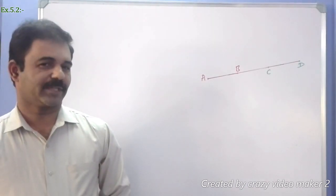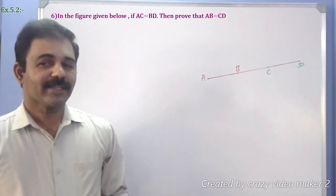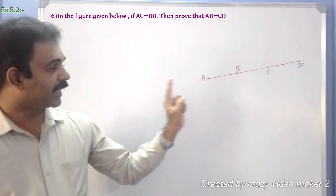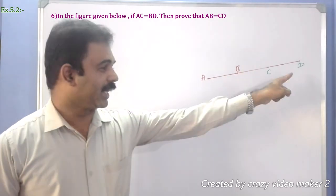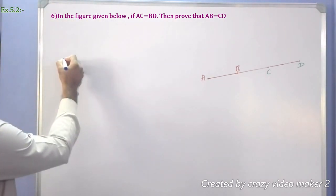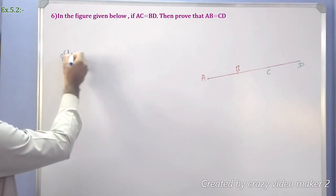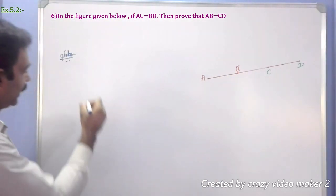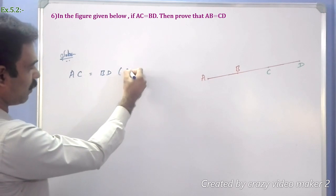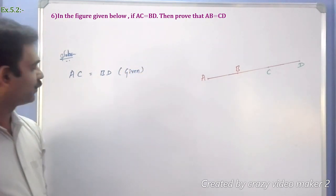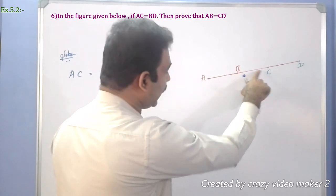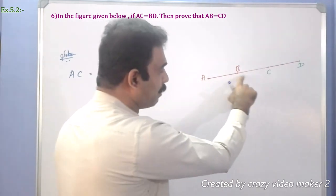Taking question number 6: in the figure given below, if AC equals BD, prove that AB equals CD. Looking at the figure: AC can be written as AB plus BC. Similarly, BD can be written as BC plus CD.